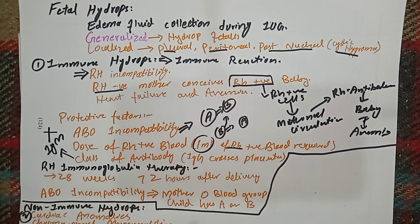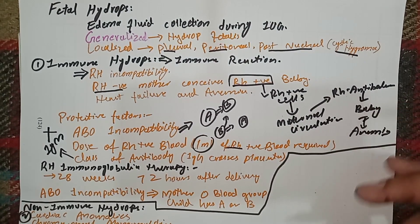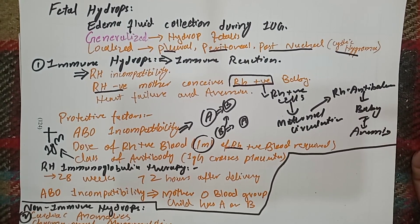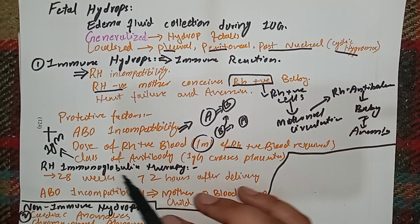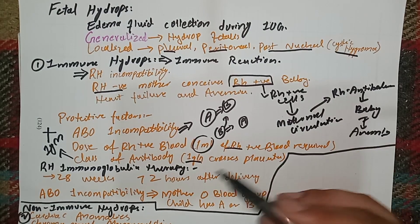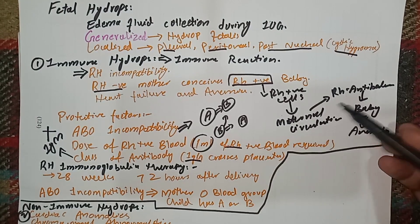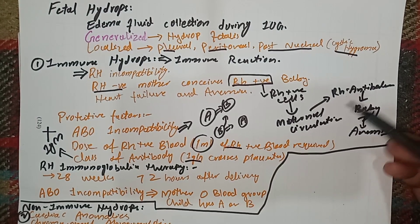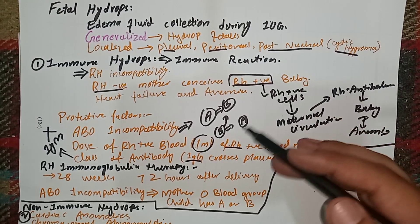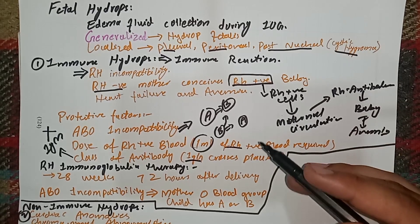In the first pregnancy, this immune response usually does not occur because IgM antibodies are produced and they don't cross the placenta. However, on subsequent exposure — in the next pregnancy — there is class switching and IgG antibodies are produced. IgG antibodies do cross the placenta, so the immune response can occur in second and subsequent pregnancies.